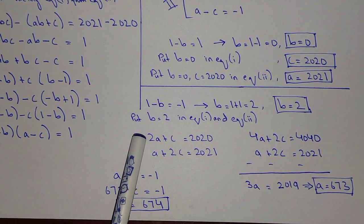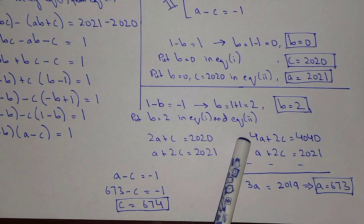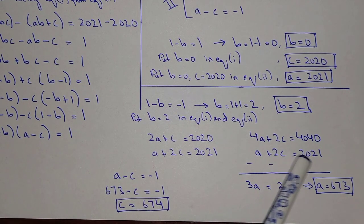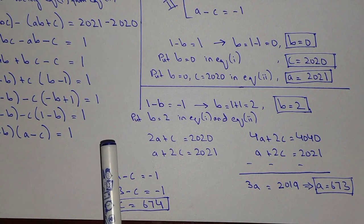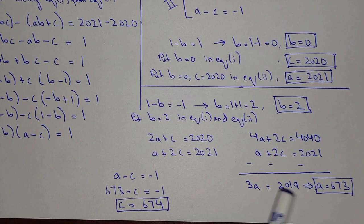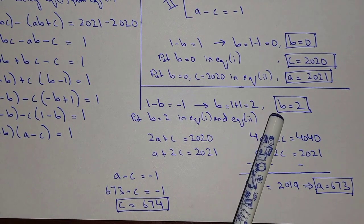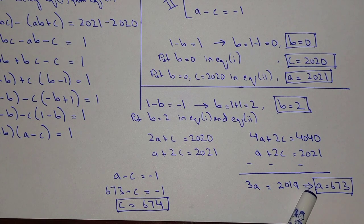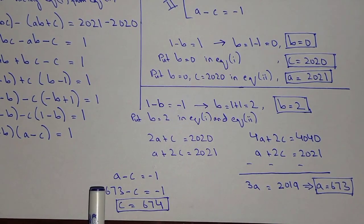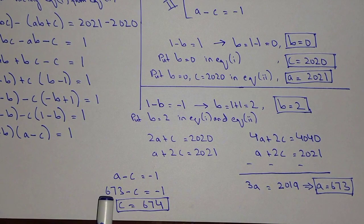Multiplying the first equation by 2 gives 4A plus 2C equals 4040. Subtracting A plus 2C equals 2021, the 2C terms cancel. We are left with 3A equals 2019, so A equals 673. From A minus C equals minus 1, substituting A equals 673 gives C equals 674.